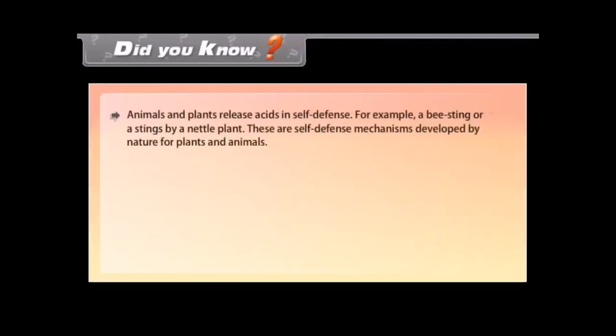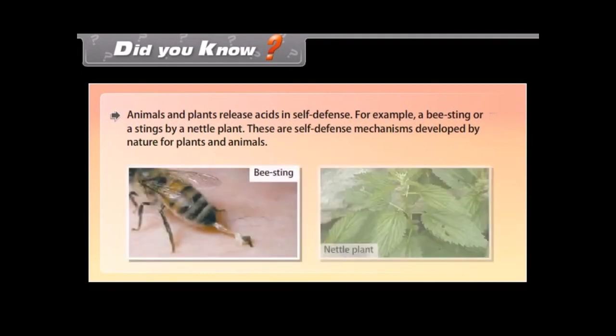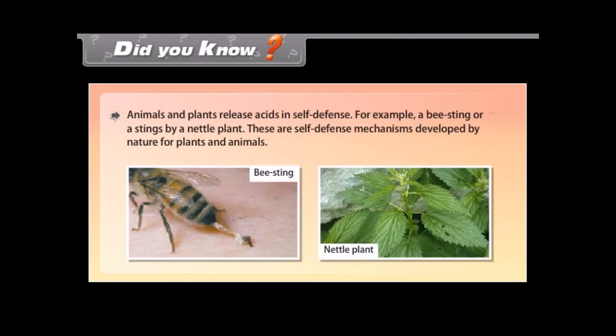Did you know? Animals and plants release acids in self-defense. For example, a bee sting or stings by a nettle plant. These are self-defense mechanisms developed by nature for plants and animals.